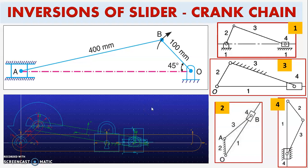Hello everyone. In this Adams tutorial we will see how to obtain inversions of a slider crank chain. As we know, different mechanisms are obtained by fixing different links of kinematic chains, and these are generally called inversions. The slider crank chain has four typical inversions, and we'll see them one by one.